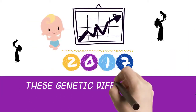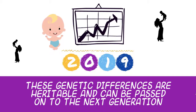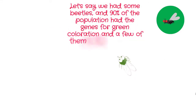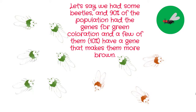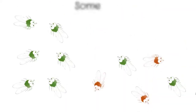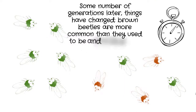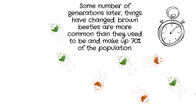These genetic differences are heritable and can be passed on to the next generation. Let's say we had some beetles, and 90% of the population had the genes for green coloration, and 10% have a gene that makes them more brown. Some number of generations later, things have changed — brown beetles are more common than they used to be, and now make up 70% of the population.